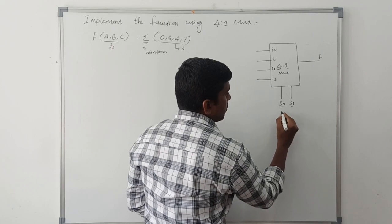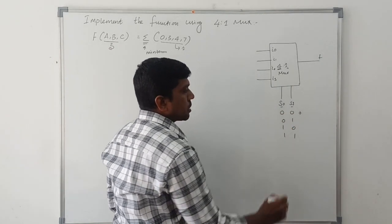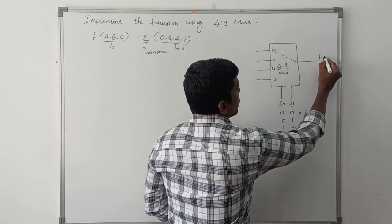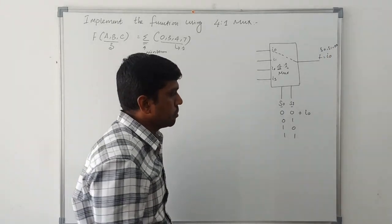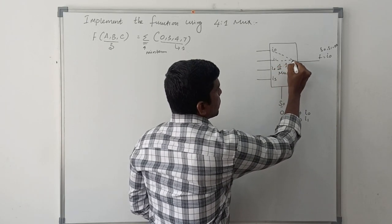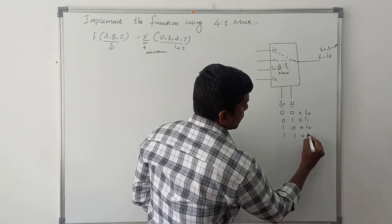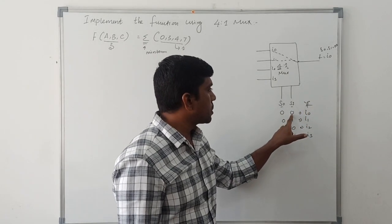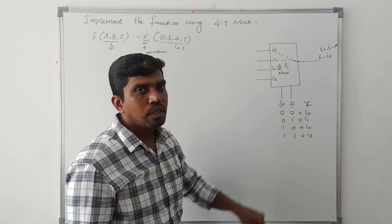The 2 selection lines make 4 combinations: 00, 01, 10, 11. If both selection lines are 0,0, then I0 is connected to output, so F = I0. When S0=0 and S1=1, I1 is connected to output. When S0=1 and S1=0, I2 is connected to output. When S0=1 and S1=1, I3 is connected to output.